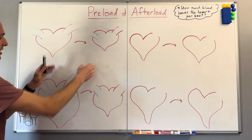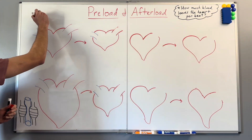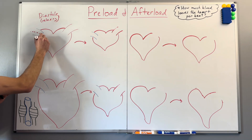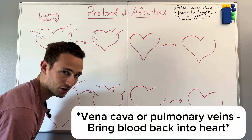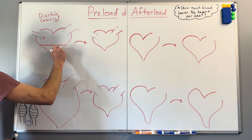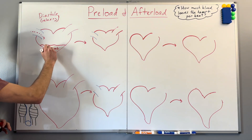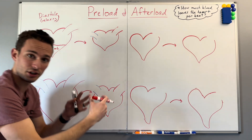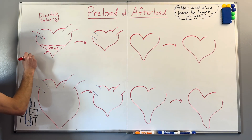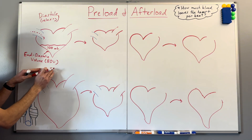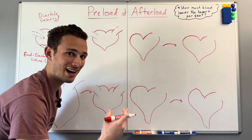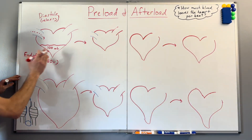Look at this heart on the top. As the heart is relaxing, called diastole, there will be blood filling up the heart through veins — either your vena cava or your pulmonary vein — and it's going to fill up that heart with a specific amount of blood, let's say 100 milliliters. So the heart's filling up. This is called the end diastolic volume, or EDV for short — basically saying, once the heart is done relaxing, how much blood is inside?